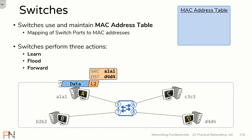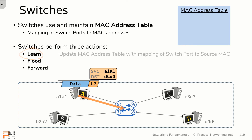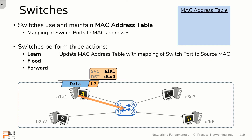Host A is going to start by putting this information on the wire. That frame will arrive on the switch on port 5, which allows the switch to perform its first action: learning. The learning action has the switch update its MAC address table with a mapping of the switch port and the source MAC address of the received frame. On port 5, this switch just received a frame with a source MAC address of A1A1, which allows the switch to update its MAC address table indicating that the device on port 5 owns the MAC address A1A1. That is the learning action.